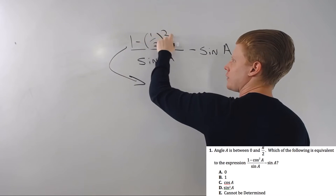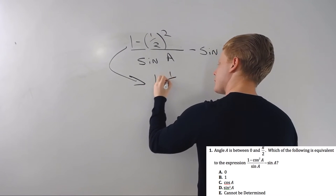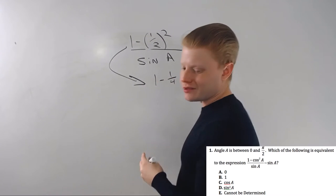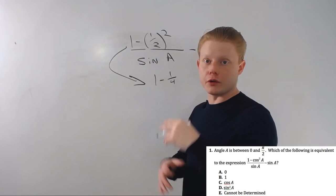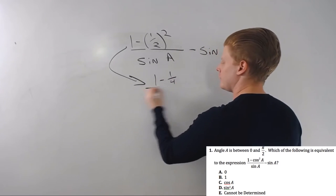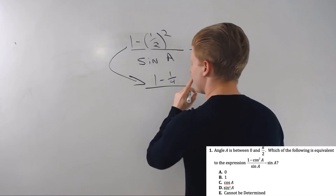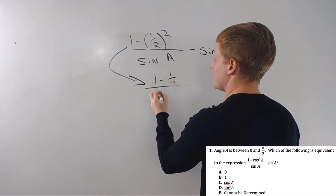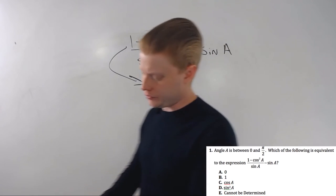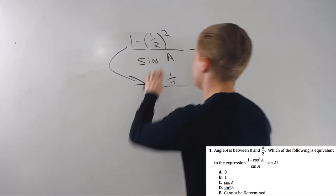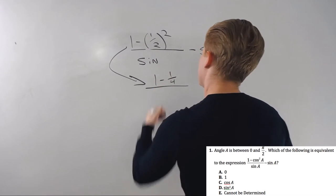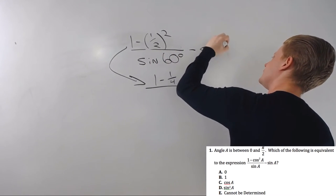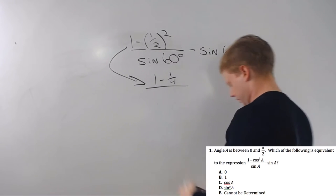So now I'll have 1 minus one half squared. One half squared—one half times one half is one fourth. When you square a fraction that's less than one but greater than zero, it's less than one. And over sine of 60, which I think is like 0.866. Let's check real quick.